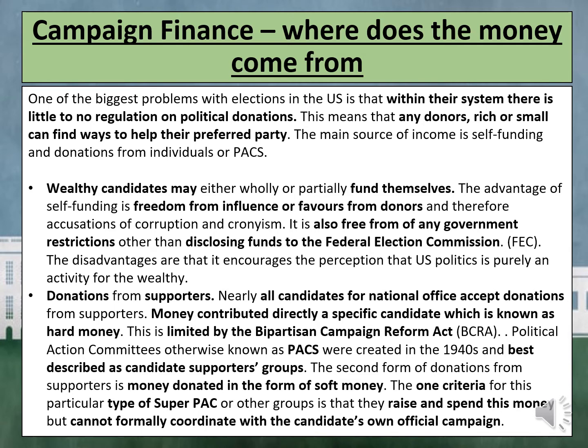The main source of income is self-funding and donations from individuals or PACs. Wealthy candidates may either wholly or partially fund themselves. For example, Trump funded his campaign with an estimated $66 million of his own money in the 2016 campaign, though he only reportedly contributed just $8,000 of self-funding in the 2020 campaign. The advantage of self-funding is freedom from influence or favours from donors and therefore accusations of corruption. It is also free from any government restrictions other than disclosing funds to the Federal Election Commission, or the FEC. The disadvantage is that it encourages the perception that US politics is purely an activity for the wealthy.